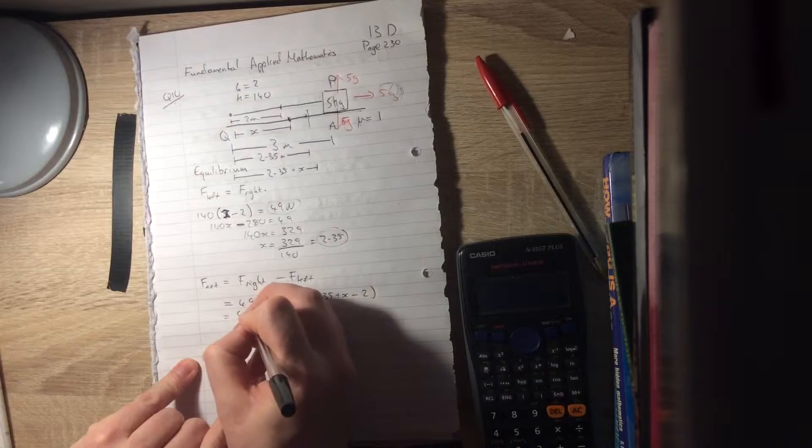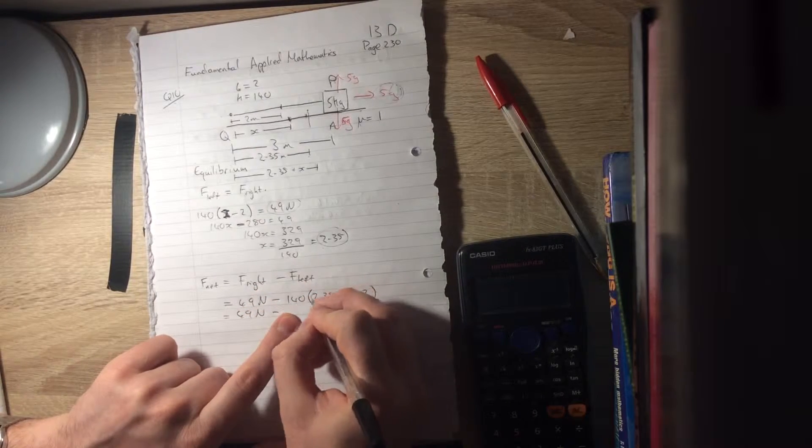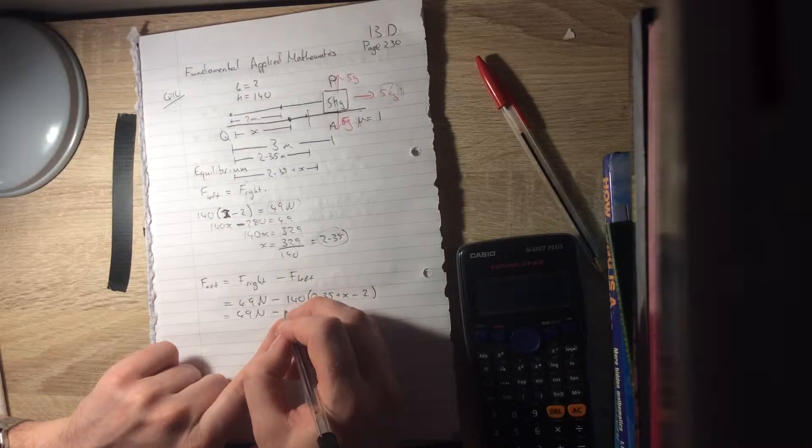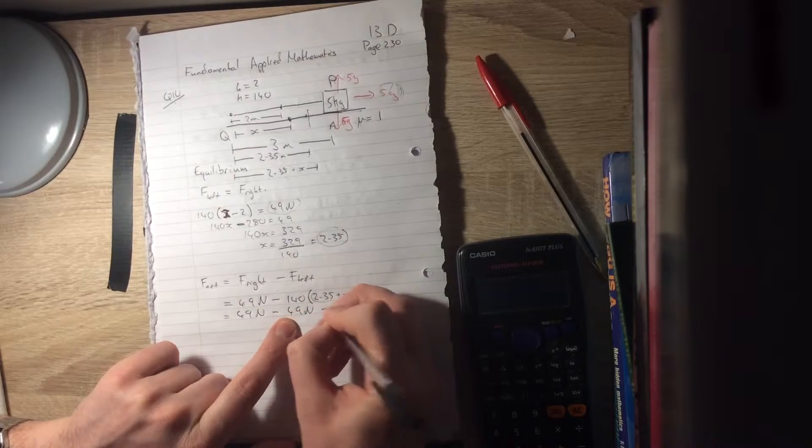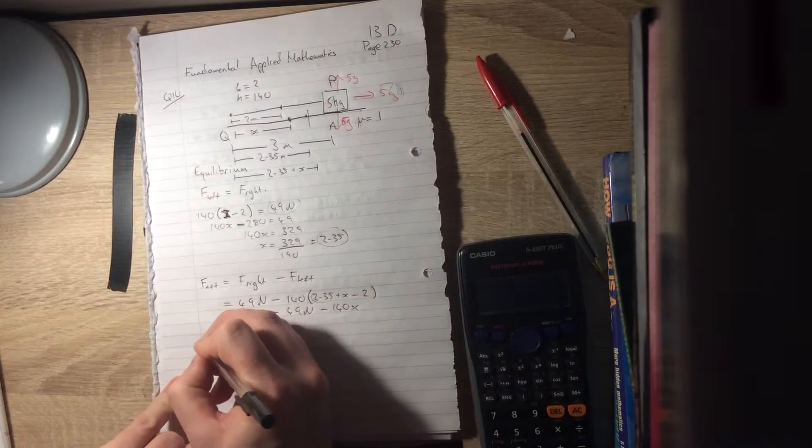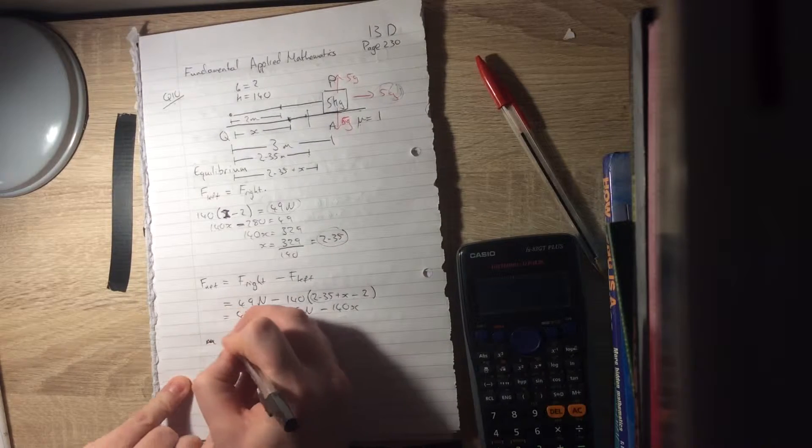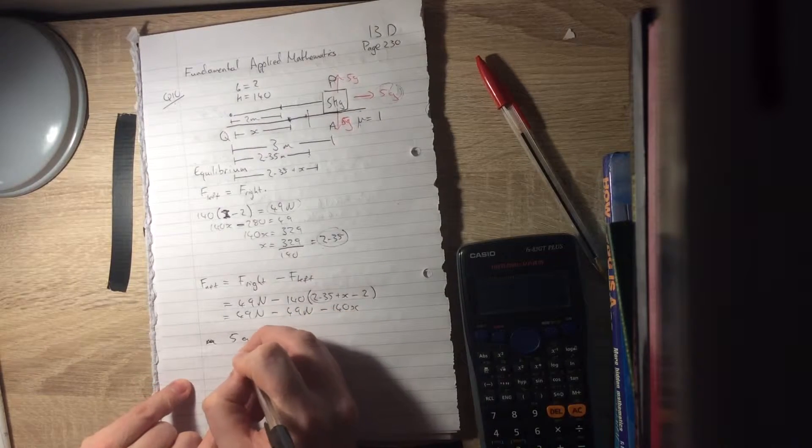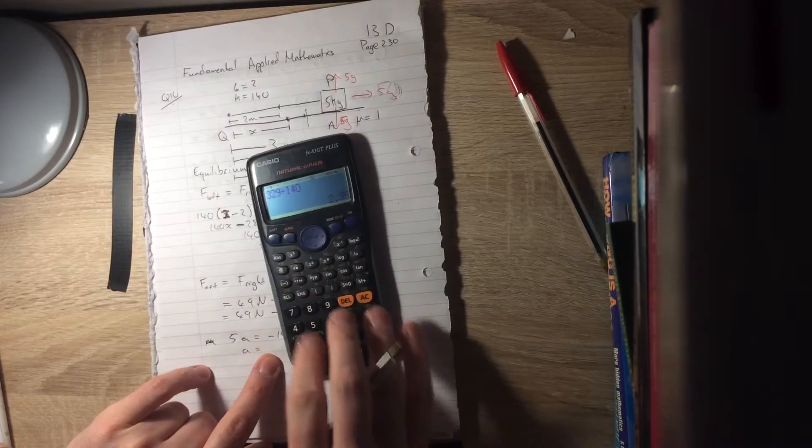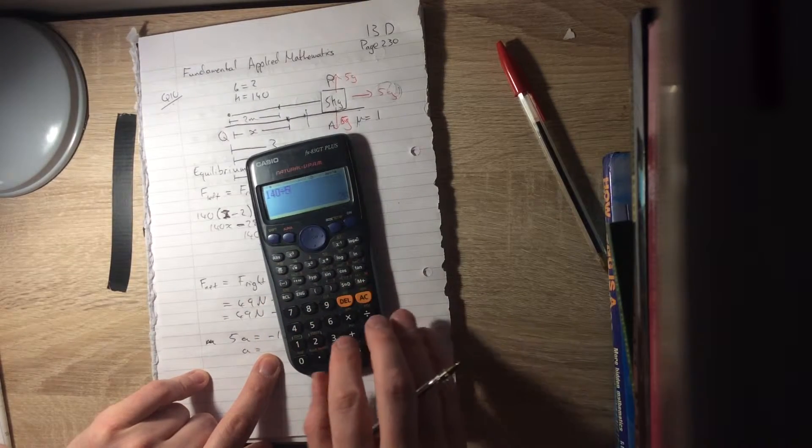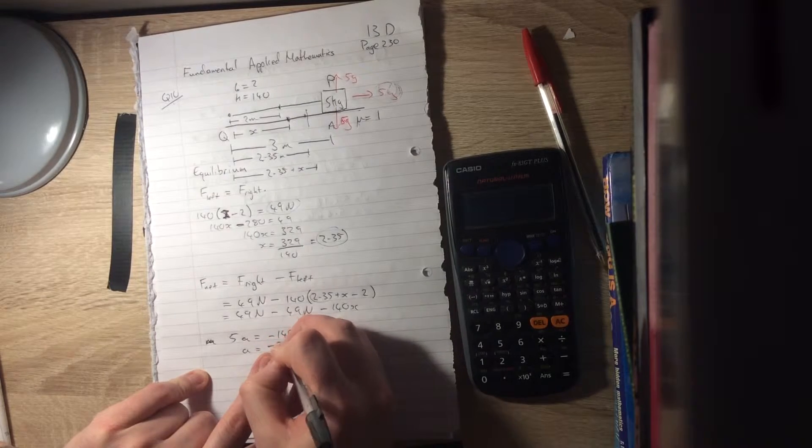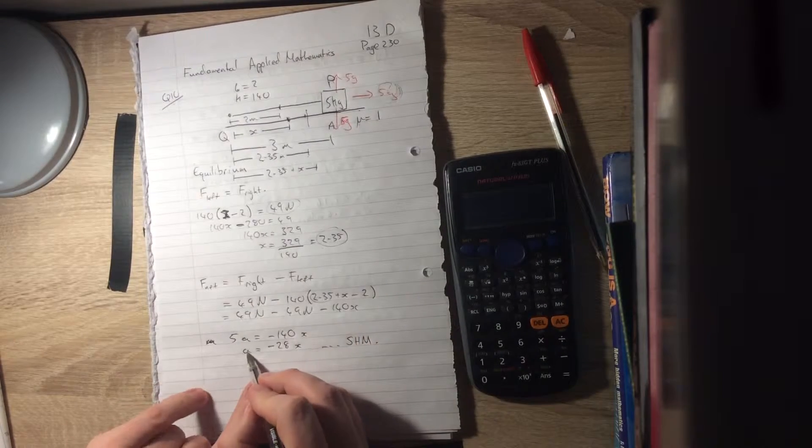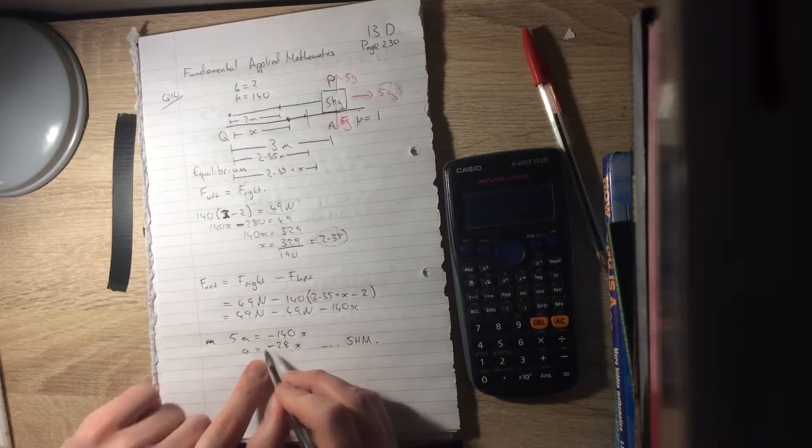And what we get out of that is 49 newtons minus 140 times 0.35 comes out as 49 newtons minus 140x. So the force, the mass times the acceleration, remember our mass is 5a, is equal to our force of minus 140x. Our acceleration is minus 140 divided by 5, which leaves us with minus 28x. So that's simple harmonic motion, because we have an acceleration that's directly proportional to our distance and in the opposite direction.